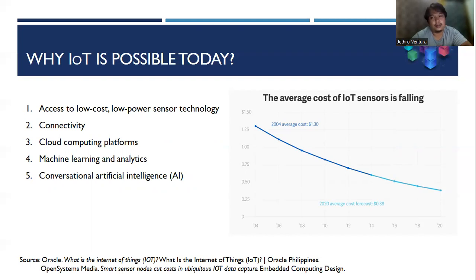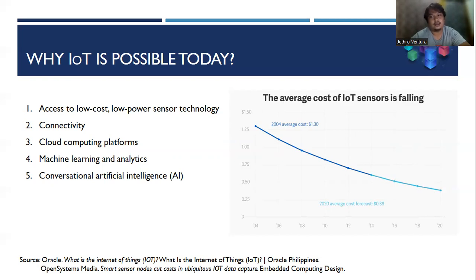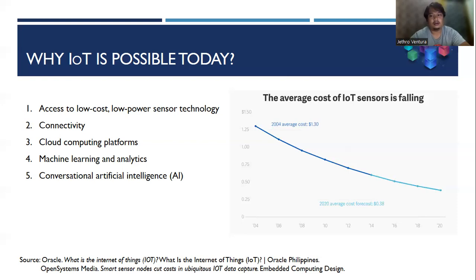Next is cloud computing platforms. The increase in the availability of cloud platforms enables both businesses and consumers to access the infrastructure they need to scale up without actually having to manage it all — data collection is now on the cloud. Next is machine learning and analytics. With advances in machine learning and analytics, along with access to varied and vast amounts of data stored in the cloud, businesses can gather insights faster and more easily. The emergence of these allied technologies continues to push the boundaries of IoT, and the data produced by IoT also feeds these technologies.